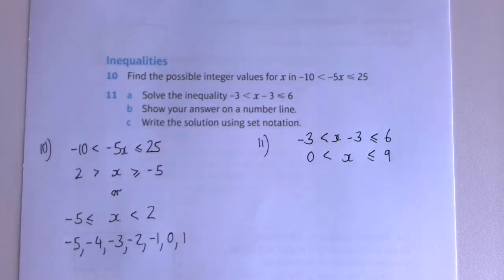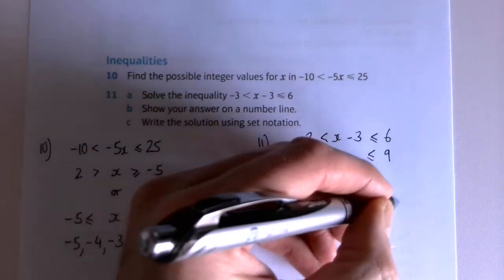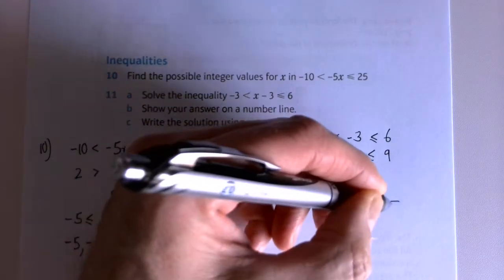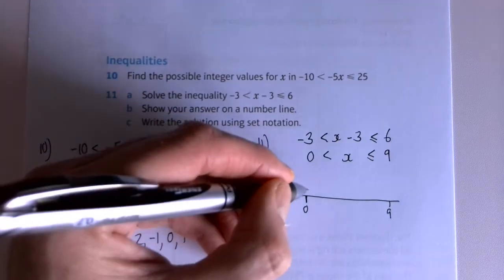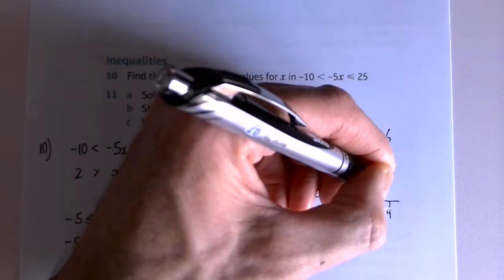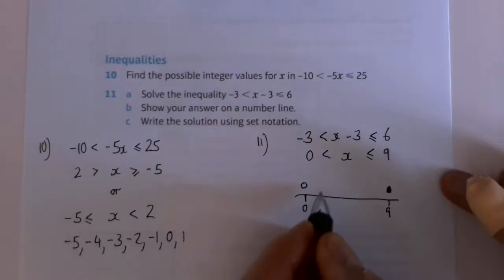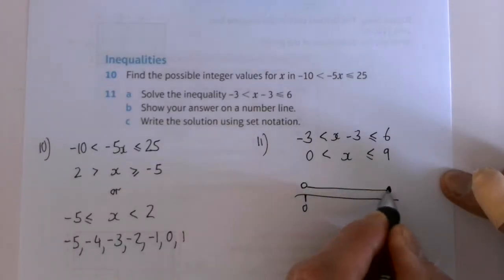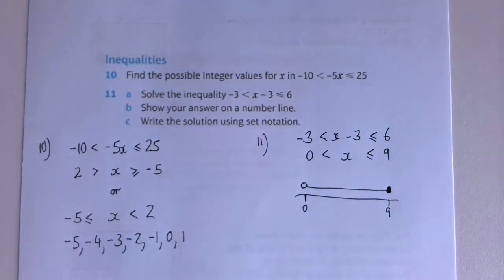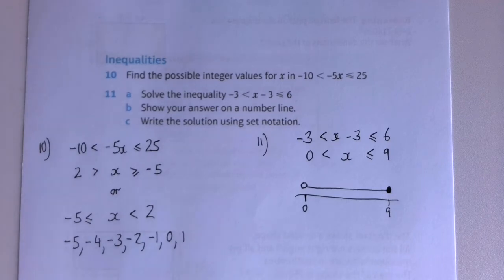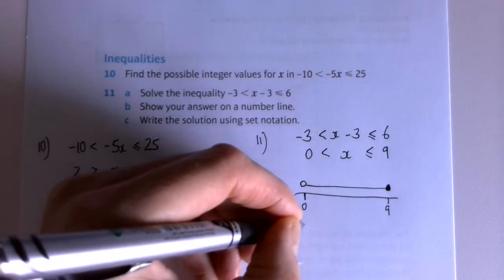With this one, I added three to both sides. The number line would look like this: an open dot at zero and a closed dot at nine joined up. I should have my ruler ready - there we go. For set notation, I seem to remember saying I'd never seen a question with a double inequality and set notation - here's one! So curly brackets...